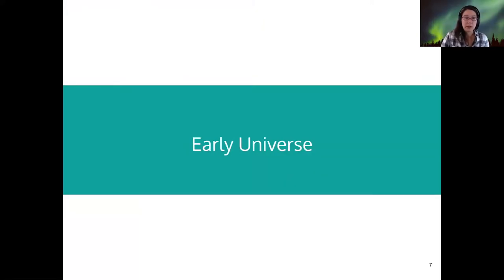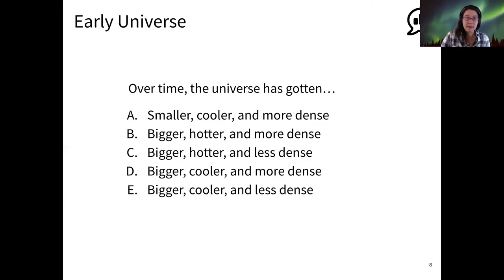So starting out with our early universe events. In order to understand the early universe, you really only have to understand one thing, more or less, and that is how did it change since it began?